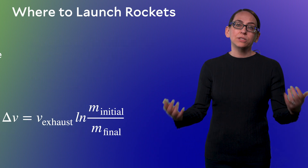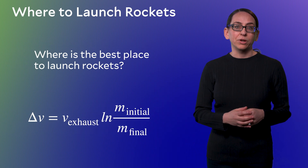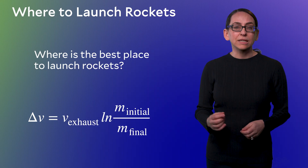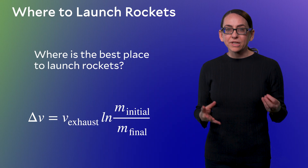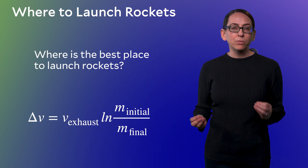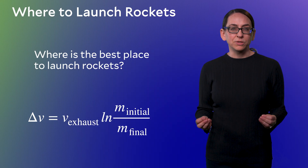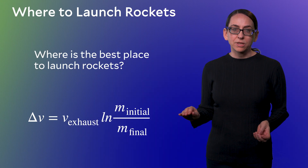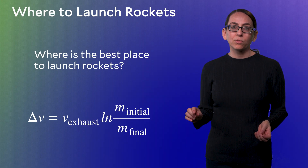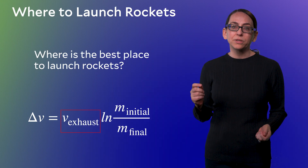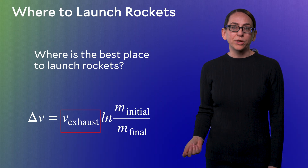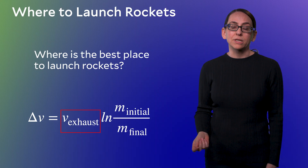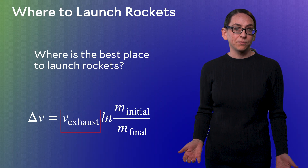So to get started, let's look at our old friend the rocket equation and ask: is there anything else we can do to squeeze out just a little bit more delta-v from this equation? Let's consider each term separately. We've already discussed the exhaust velocity, which is largely set by the choice of rocket fuel and is unlikely to improve anytime soon.